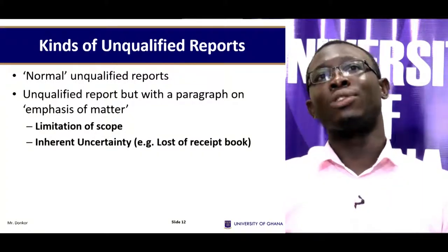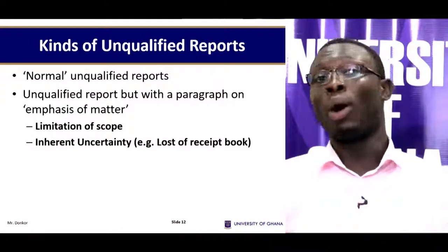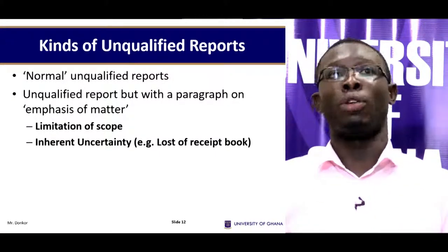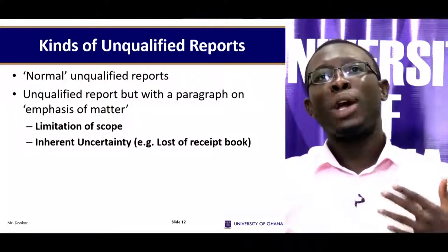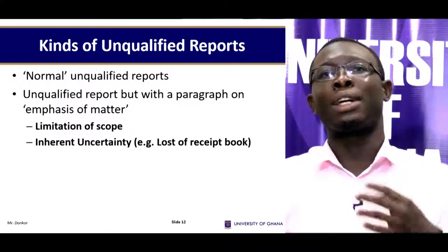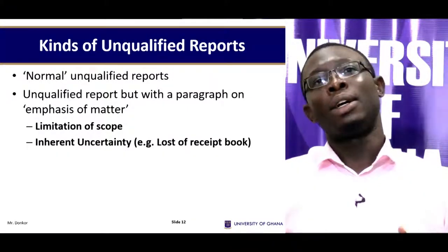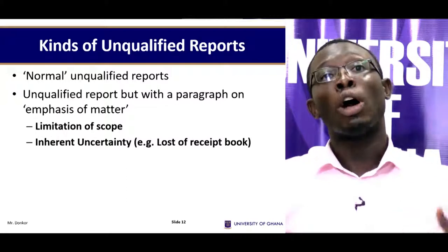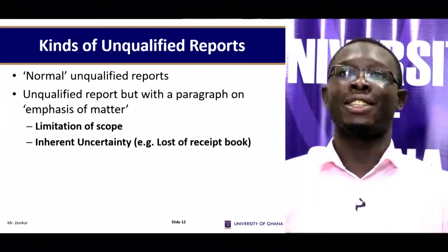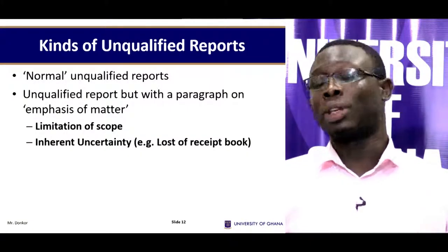There are two kinds of unqualified report. The first is the normal or general one, showing that everything is true and fair. The second is an unqualified report but with an emphasis of matter paragraph, which can relate to a limitation of scope, an inherent uncertainty, loss of receipt books, and so on.